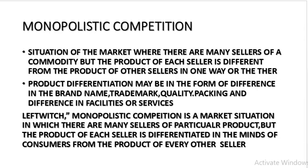Monopolistic competition is a market situation in which there are many sellers of a particular product, but the product of each seller is differentiated in the minds of the consumer from the product of every other seller. Like we have LG washing machine, IFB washing machine, Whirlpool washing machine. Each product may have actual differentiation or artificial differentiation. Product differentiation is the basic feature of monopolistic competition. Under perfect competition we have homogeneous product; under monopoly the product may or may not be homogeneous; under monopolistic competition there are large number of buyers and sellers but they deal with close substitutes.